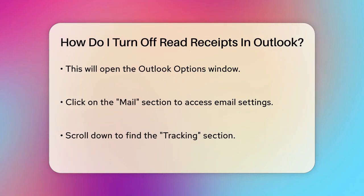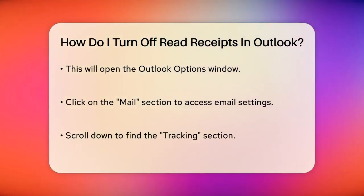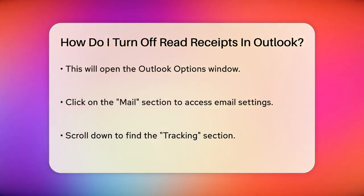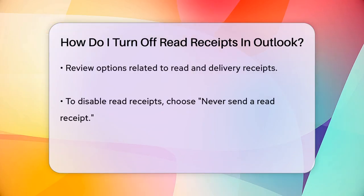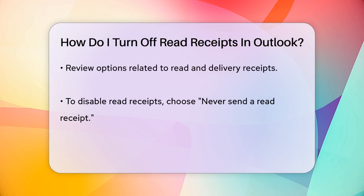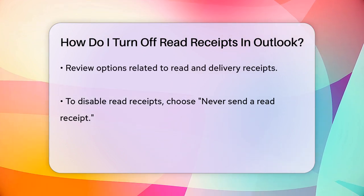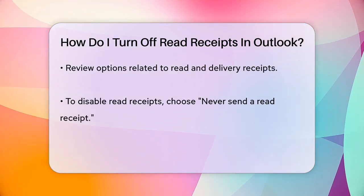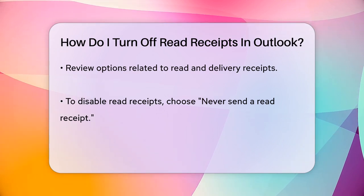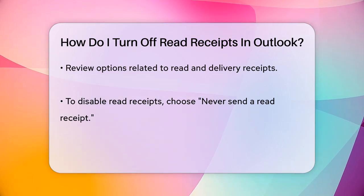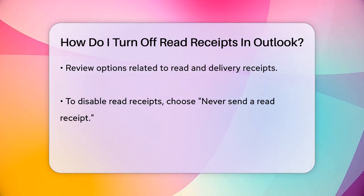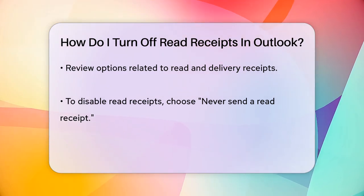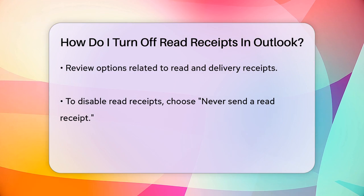Here, you can choose how Outlook handles read receipts for incoming emails. To turn off read receipts completely, click on Never Send a Read Receipt. This means that whenever someone sends you an email with a read receipt request, Outlook won't send any notification back to the sender. If you prefer to be asked each time, you can select Ask Each Time Whether to Send a Read Receipt. This way, you have control over each individual email.